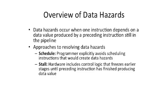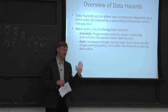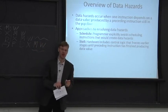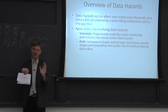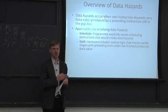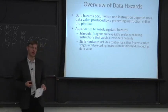The next approach, which we'll be talking more about today, is to stall. If you have a data dependence, you can stall later instructions that are dependent on earlier instructions. The hardware does this freezing — you freeze the pipeline until the preceding instruction has generated the value. Importantly, you have to freeze everything before the dependent instruction, not just the dependent instruction itself, otherwise traffic behind it will pile up.